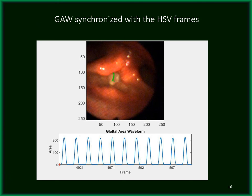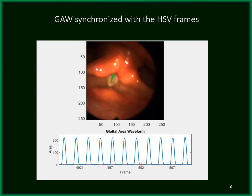Here is a video that shows the detected edges of the vocal folds along with the calculated glottal area waveform. You can see the HSV frame on the top; detected edges of the left and right vocal folds are plotted on top of each HSV frame in green and yellow colors. In the bottom of the video, the corresponding glottal area waveform is shown, synchronized with the HSV sequence.